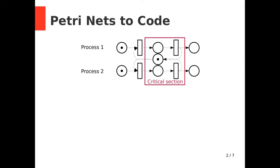Process 1 and 2 are in their initial state. The shared resource is available. When process 1 wants to enter its critical section, the transition fires, consuming the shared resource.